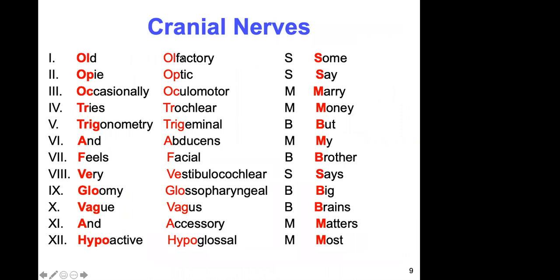You should know the 12 cranial nerves by Roman numeral one through twelve. They are: olfactory, optic, oculomotor, trochlear, trigeminal, abducens, facial, vestibulocochlear, glossopharyngeal, vagus, spinal accessory, and hypoglossal.